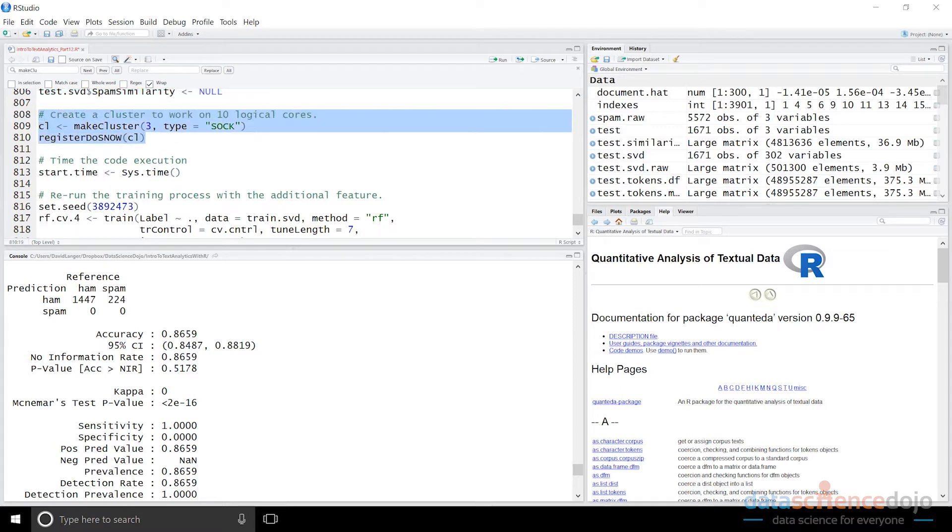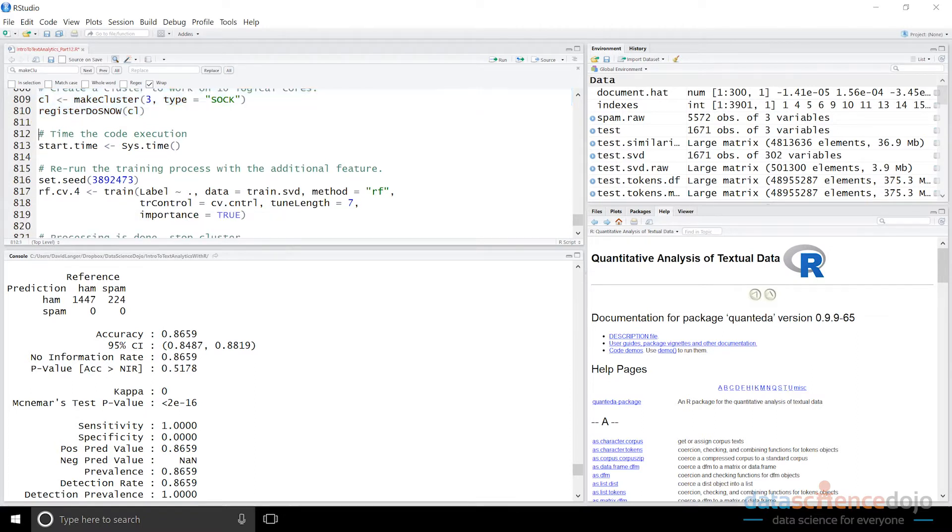We're keeping text length because we saw the text length was a good feature. So I've actually ran this code previously, just so that you wouldn't have to wait to see it run. Now, next up, I'm running this code and the code in the GitHub will be configured for 10 logical cores. I actually ran this on my laptop, which is what I use to record the videos. So I turned the cluster cores down to three because I only have four logical cores on my laptop. So you will want to adjust this number based on the power of your machine.